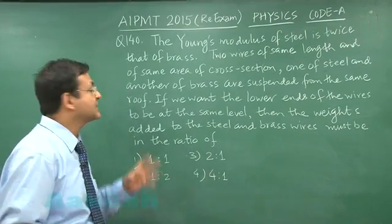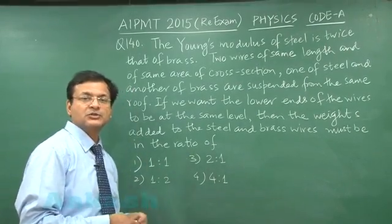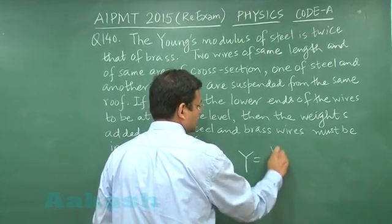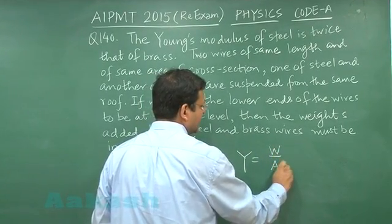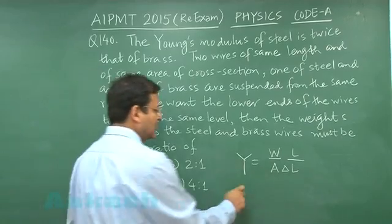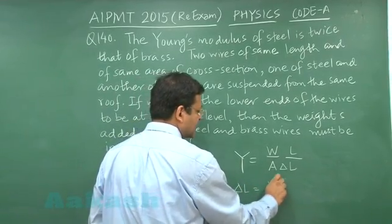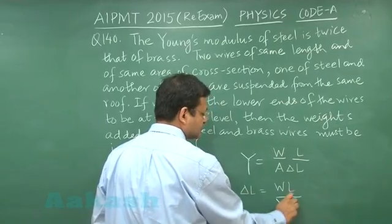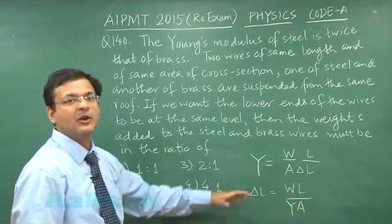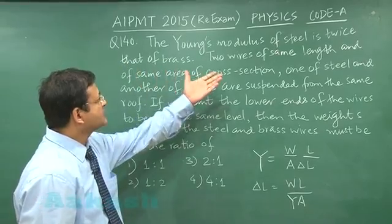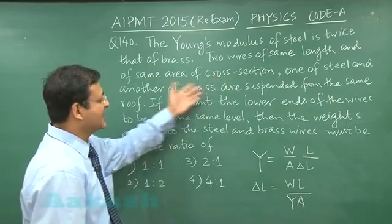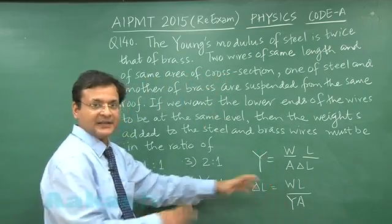Question 140 is based on Young's modulus of elasticity. The formula used is: Young's modulus Y = (Force/Area) / (ΔL/L), so ΔL = WL/(YA). The question states that Young's modulus of steel is twice that of the other material, and both wires have the same length L and same area of cross-section A.